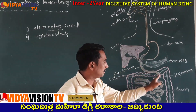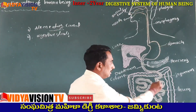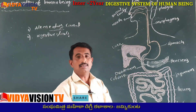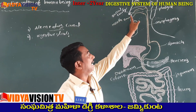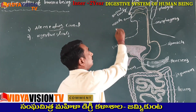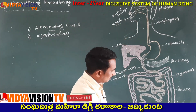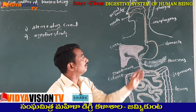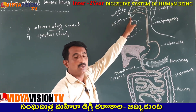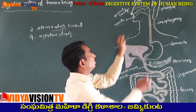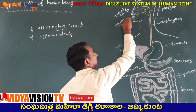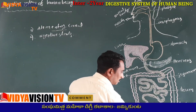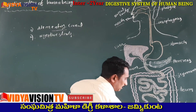This completely alimentary canal is a long tube-like structure, and at some places it has coiled-like structures. The anterior opening of the alimentary canal is called the mouth. The posterior opening of the alimentary canal is called the anus.